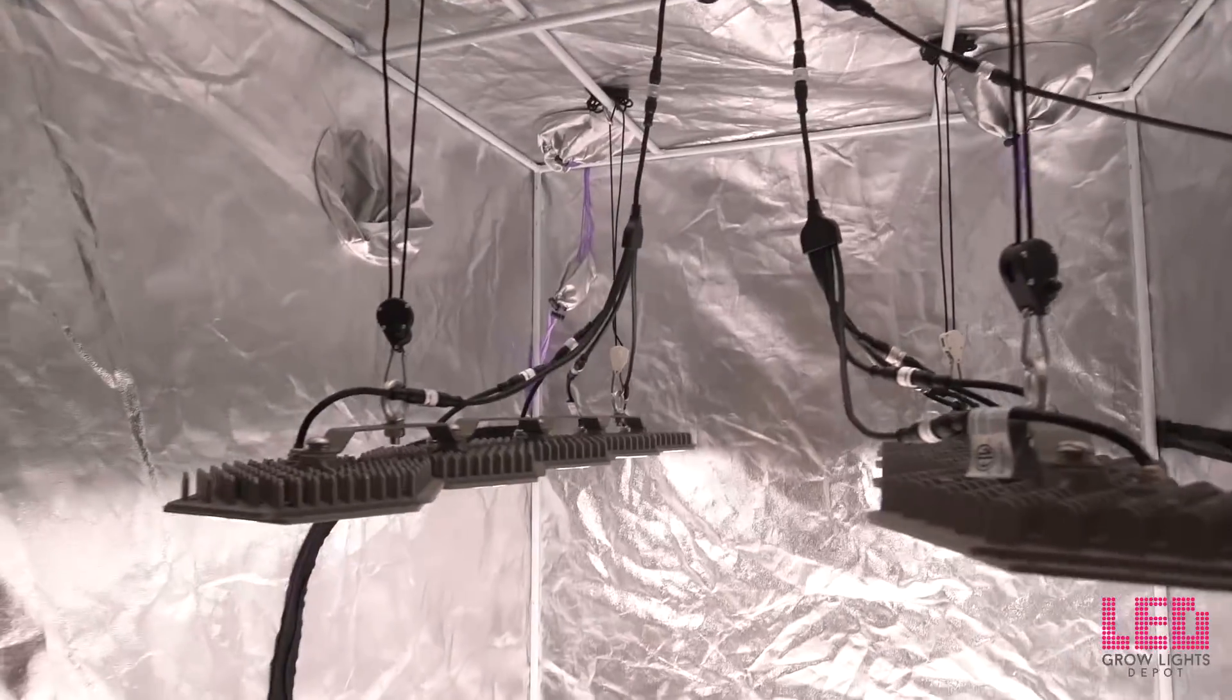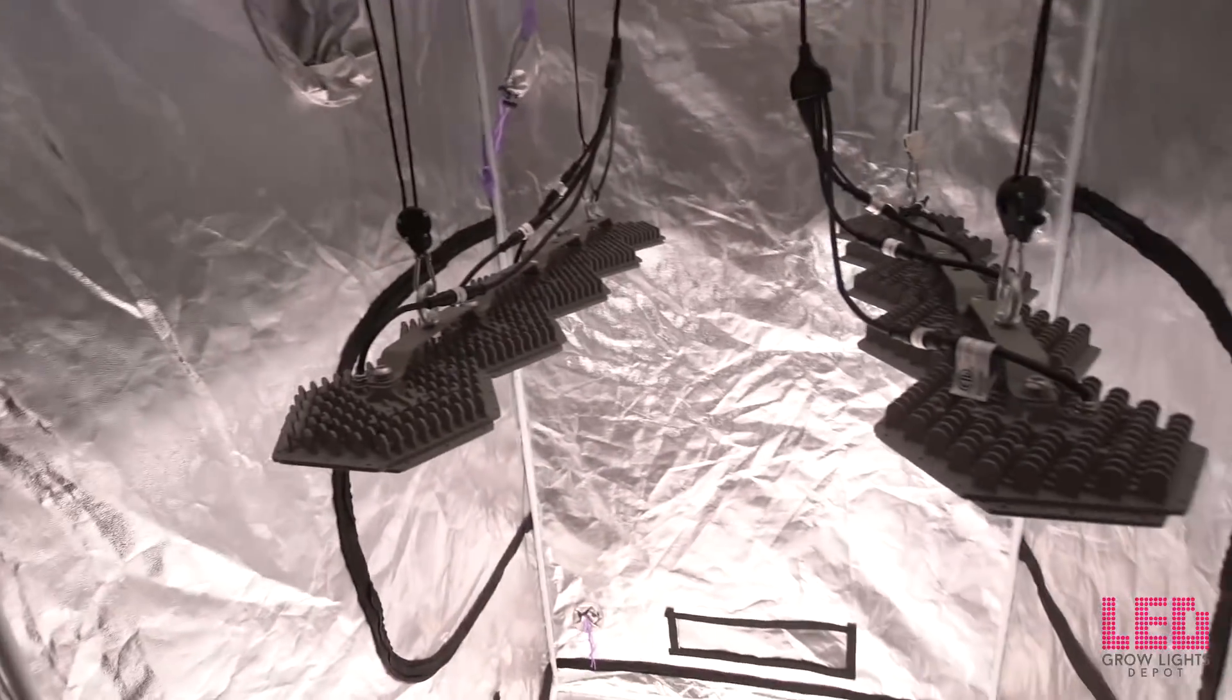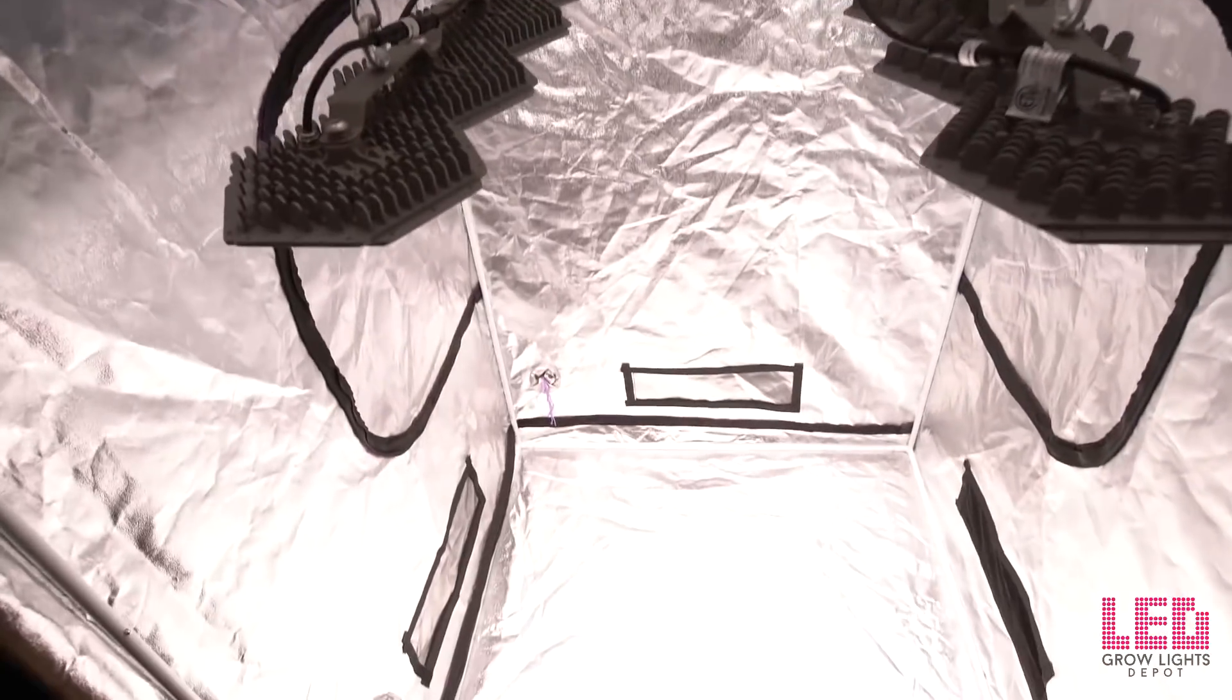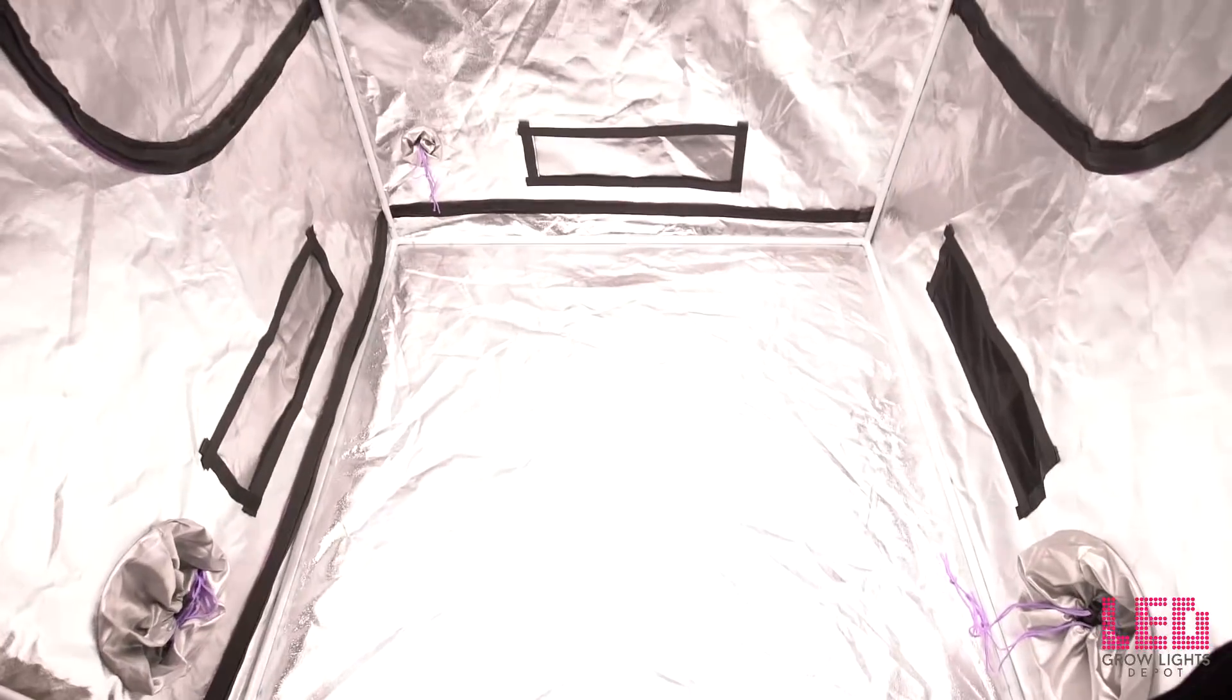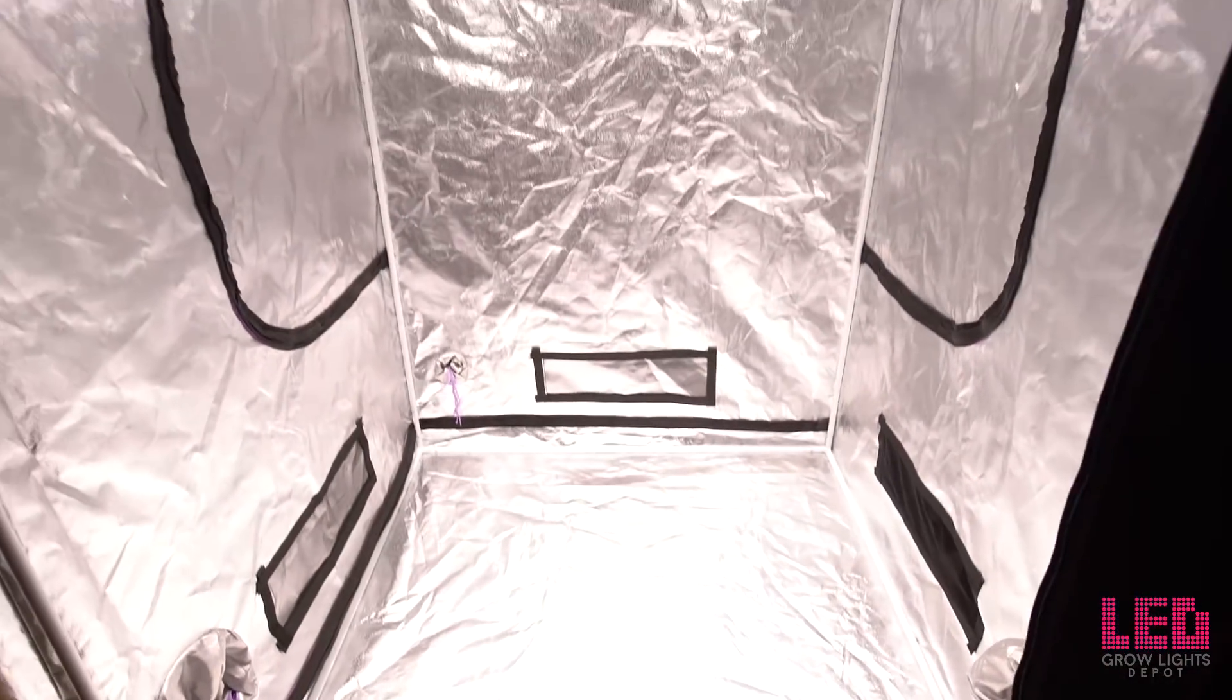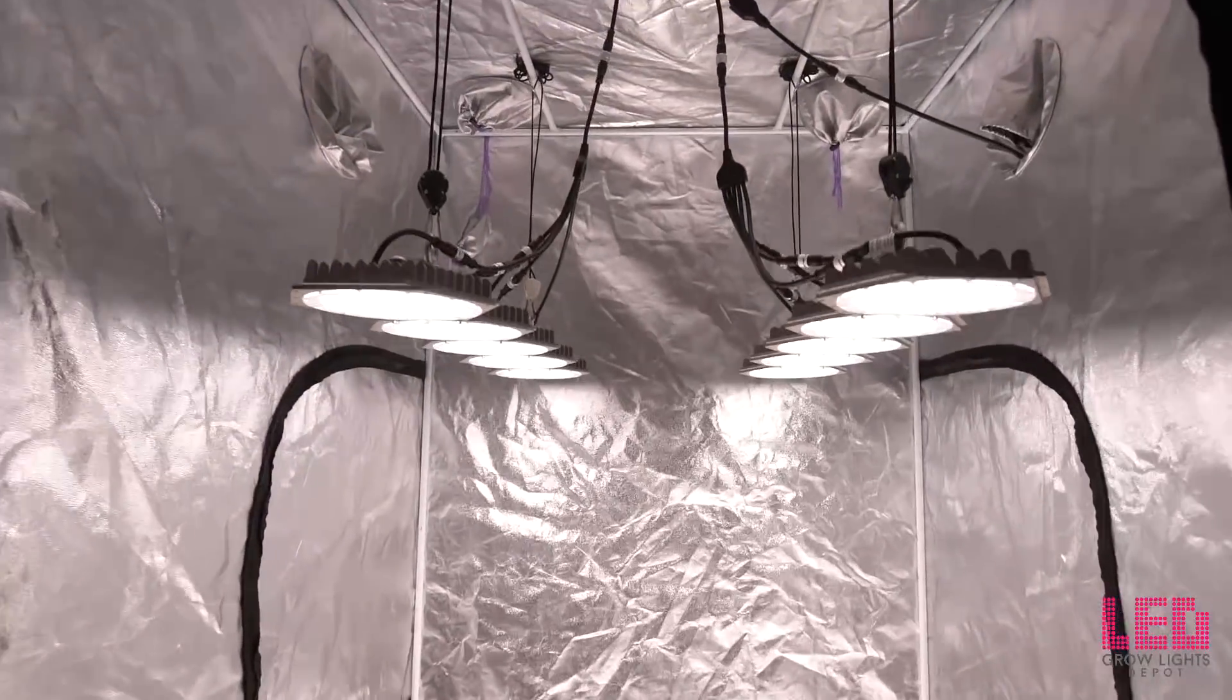The N-Light Sun Disc 600 watt draws around 640 watts at the wall, or about 320 watts per strip, or 64 watts per disc. The fixture is rated for 120 volts and pulls 5.63 amps at 120 volts.